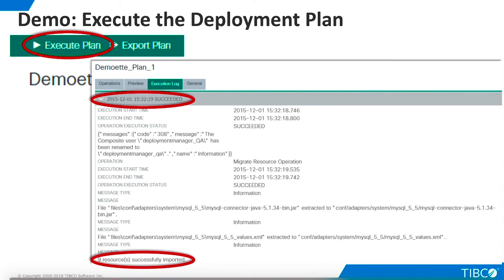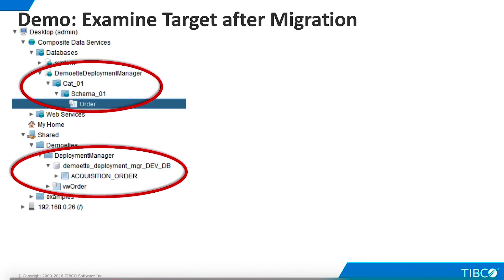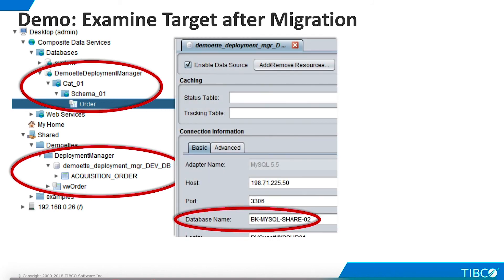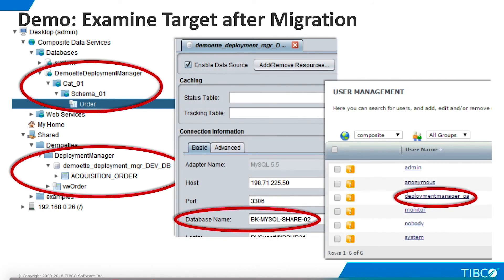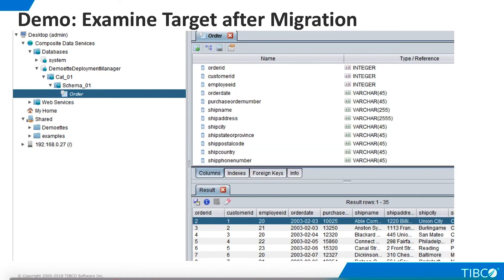Now we are ready to execute the plan. As the Execution Log tab shows, the plan succeeds and nine resources are imported to the target TDV instance. Returning to the target TDV instance, we see the results of the migration: our new virtual database appears along with the development artifacts needed to produce it. The data source name has been changed, and the new user appears with the name change we specified. We can open the order table on the new data source and successfully retrieve data. Our demo is complete.